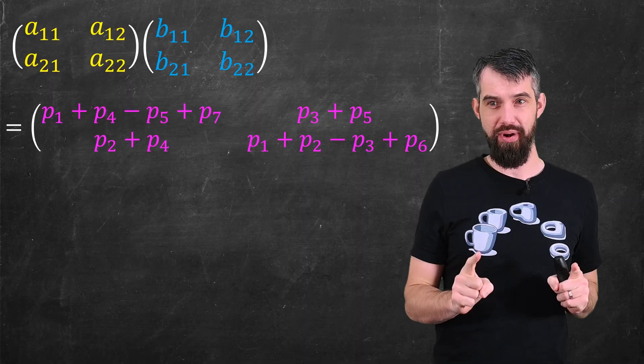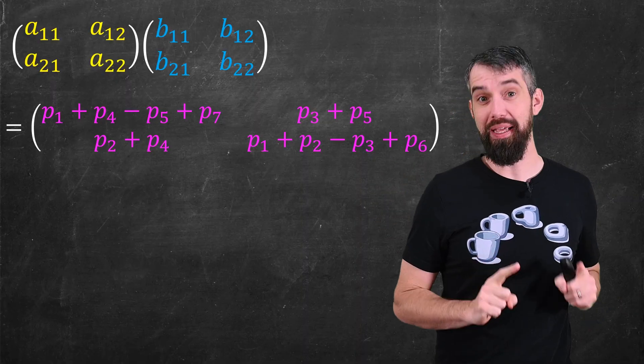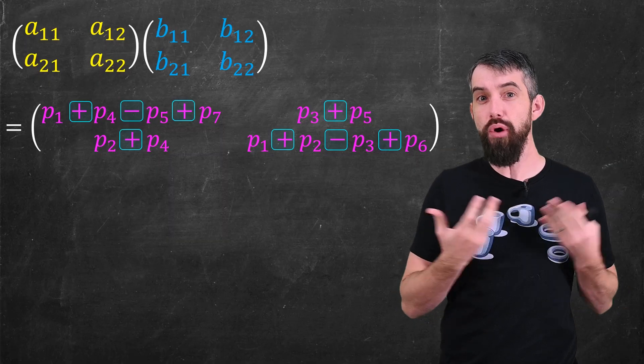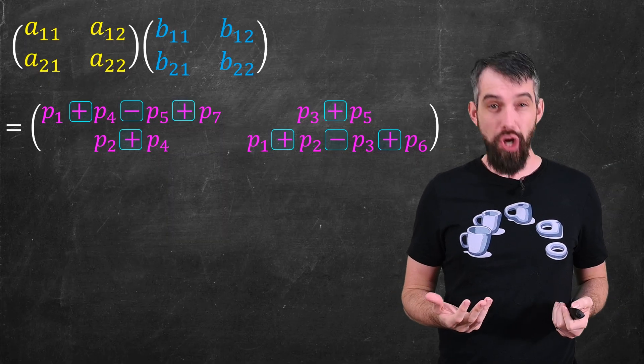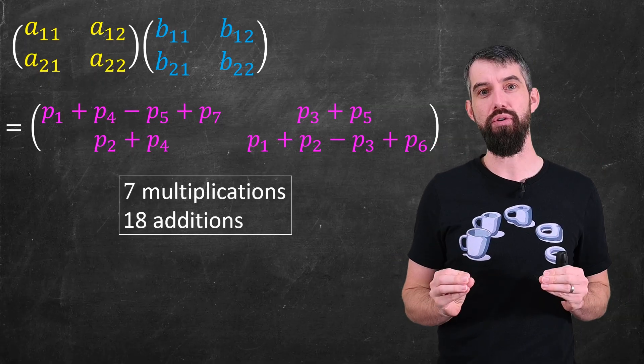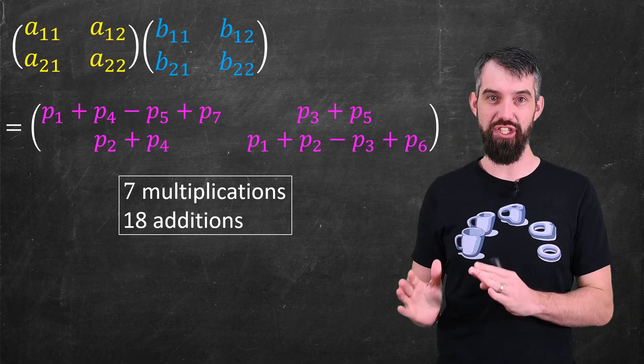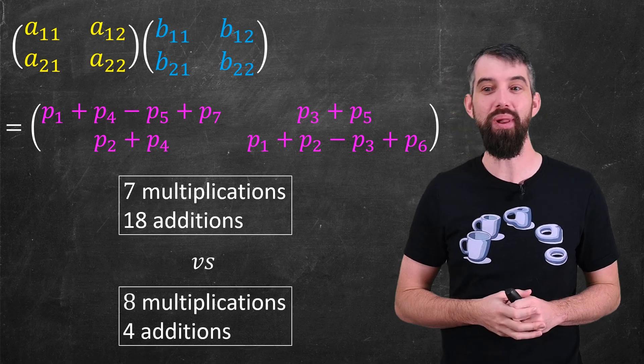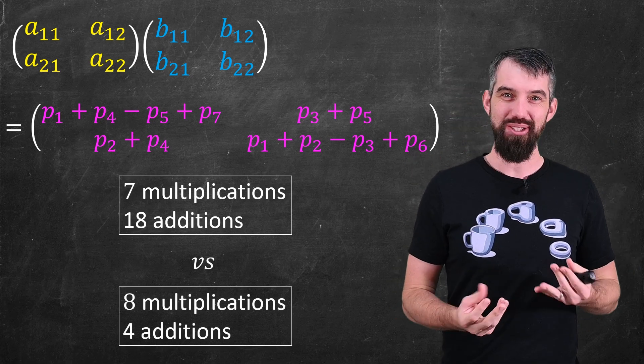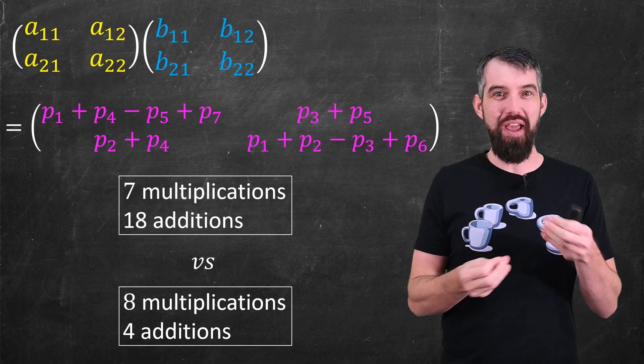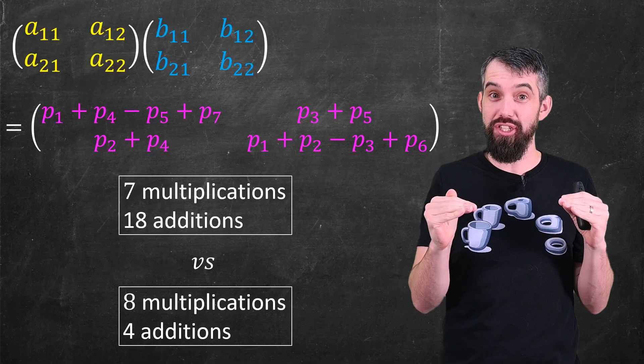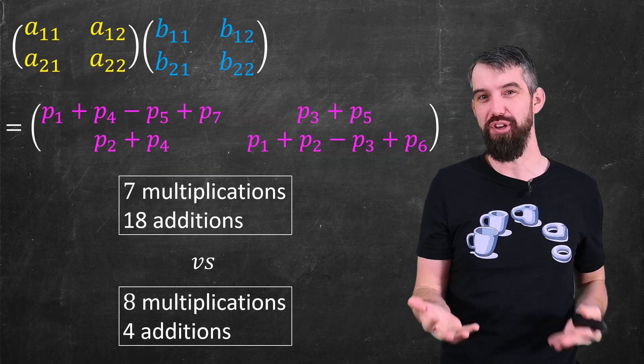But what I really want to note is that there's no new multiplications here. The only thing I have is a bunch of new additions. There's no new multiplication. So in total, what do I have? Well, I have seven multiplications needed in this algorithm, and eighteen additions. This is in contrast to the normal algorithm, which has eight multiplications, but only four additions. So what I've sort of done, by this weird way of playing around, is going from eight to seven multiplications, but adding a whole bunch of new additions that I have to do.